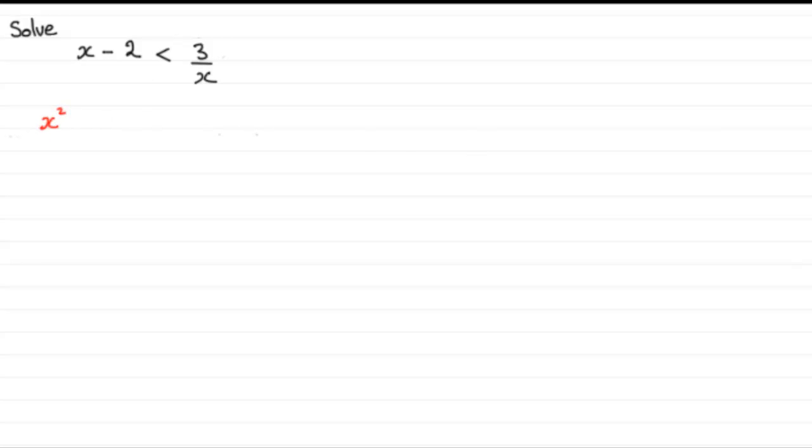So we've got x squared times x minus 2. The inequality stays exactly the same way round and then we multiply the other side by x squared. So we've got x squared times 3 over x.